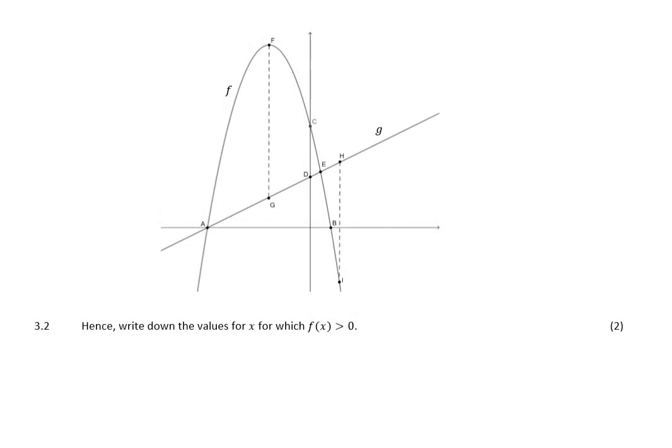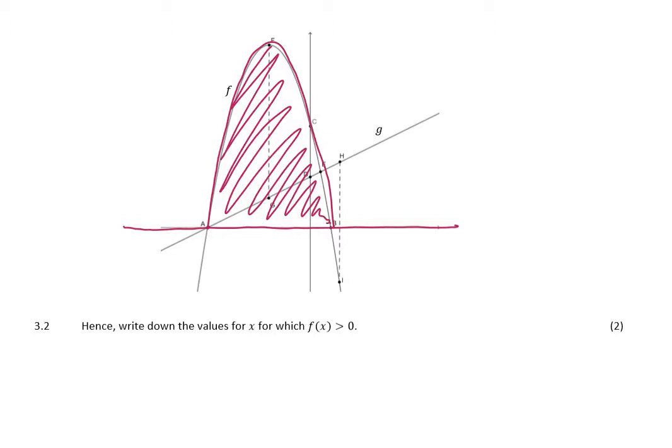Right, on to the next question. It says, hence, write down the values for x for which f(x) is greater than 0. Now, f(x) was my parabola. So they want to know where is this parabola greater than 0? Well, on the x-axis is where it's equal to 0. So where it is above 0 is between a and b. This region here shows me the region where the parabola is greater than 0. So a was at negative 5, b was at 3. This is one interval. My x must be greater than -5 and less than 3. Not equal to -5 and 3, because the question said greater than 0, not equal to 0. So that was quite a nice inequality question.